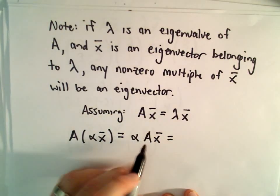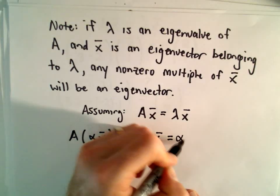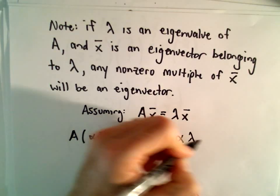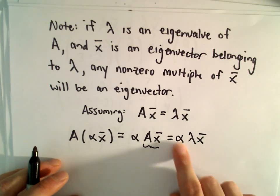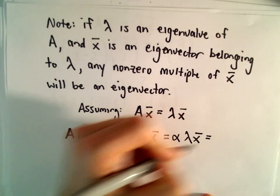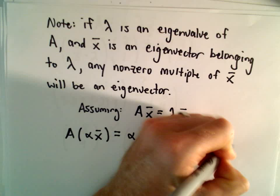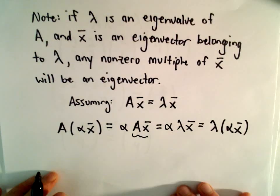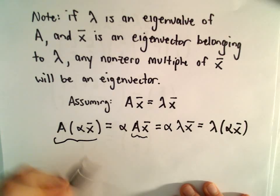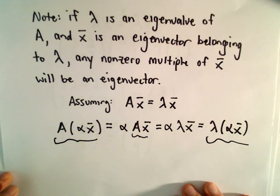But again, by assumption, A times x equals λ times x. And since α is just a scalar, we can put that back inside, and we'll have λ times α times x. And now, we've got our desired result.